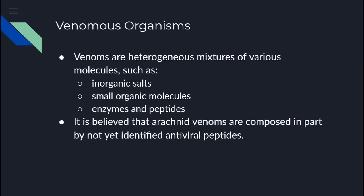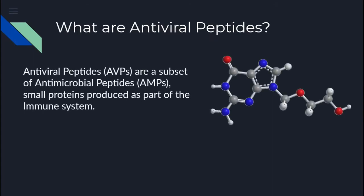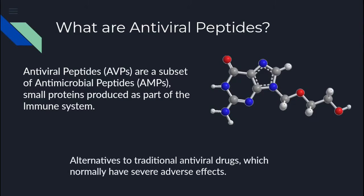First, we will talk about venoms. Venoms are heterogeneous mixtures of various molecules such as inorganic salts, small organic molecules, enzymes, and peptides. It is believed that arachnid venoms are composed in part by not yet identified antiviral peptides. Antiviral peptides, or AVPs, are a subset of antimicrobial peptides, AMPs, which are small molecules that perform defense functions in the immune system of all living beings. These compounds have been studied as possible alternatives to traditional antiviral drugs, which normally have severe adverse effects.